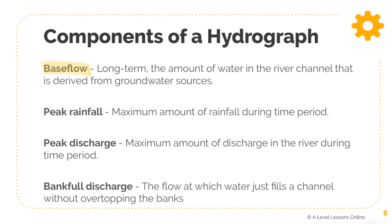Base flow is important. The base flow is the amount of water in the river channel derived from groundwater sources, and it is usually prolonged after the flood has occurred. Base flow is usually the lowest level because it is part of the water table inherent in the river. A flood causes the level of water to rise above this, but base flow will always remain consistent and constant, reflecting the groundwater that is in the river.